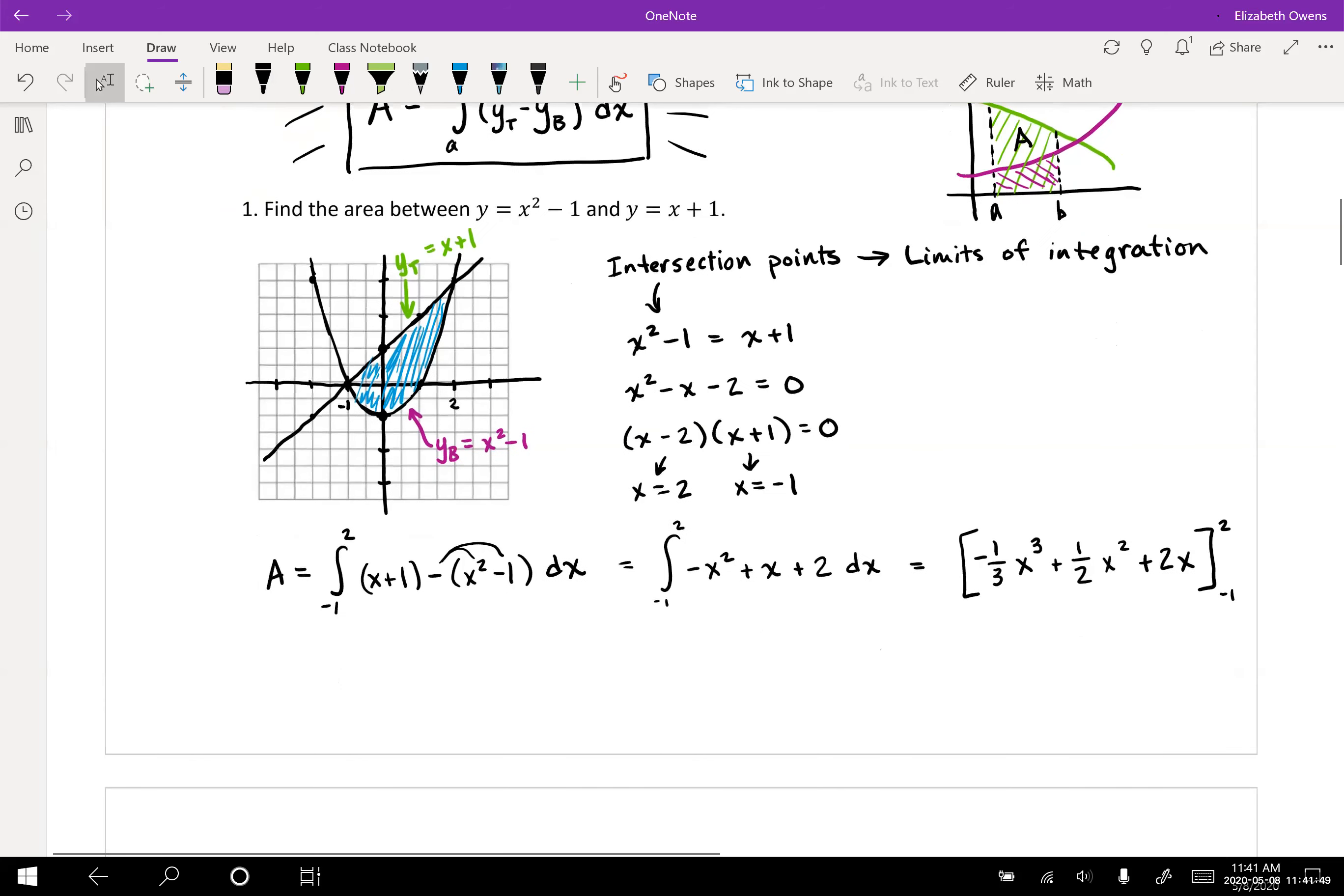Let's plug in our limits. Start with the top limit: negative one third times two cubed plus one half of two squared plus two times two, and then we'll subtract and plug in our lower limit: negative one third times negative one cubed plus one half of negative one squared plus two times negative one.